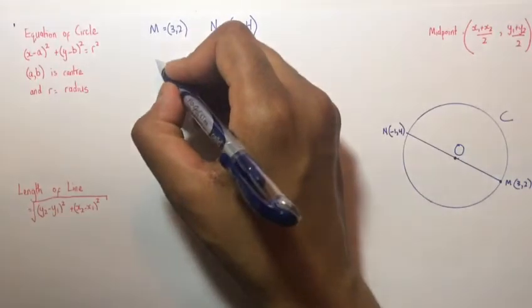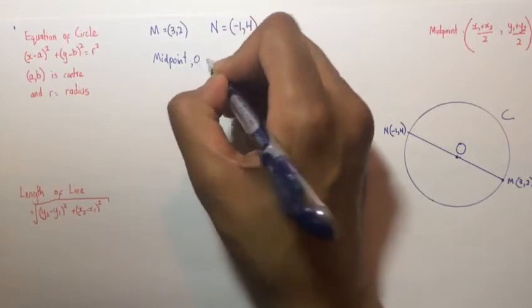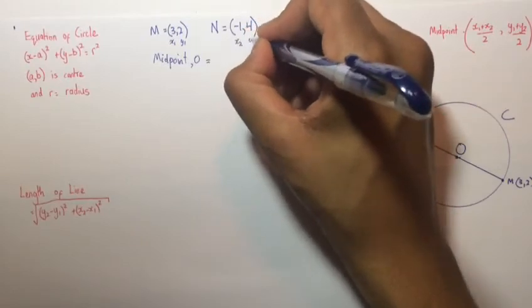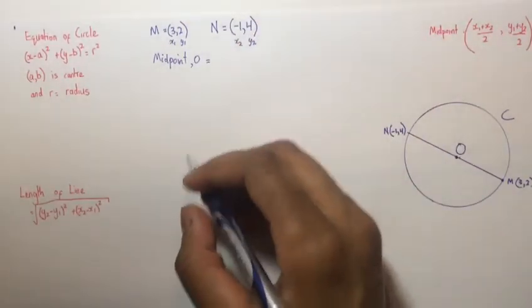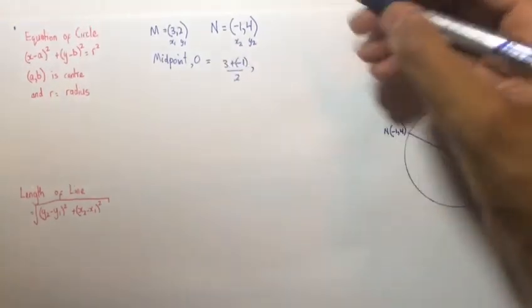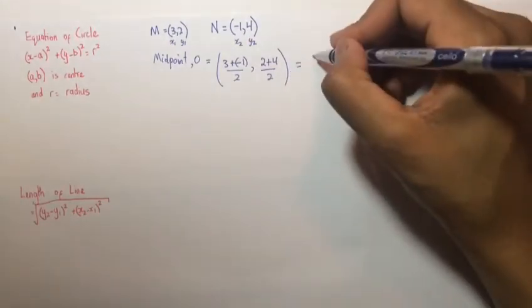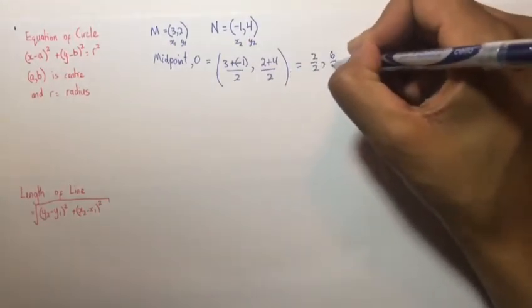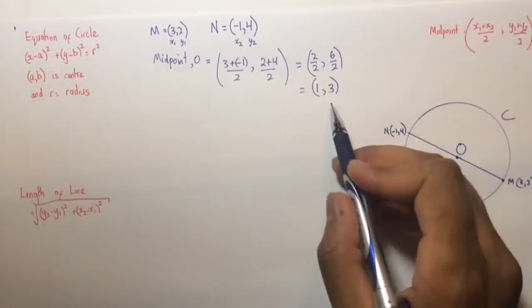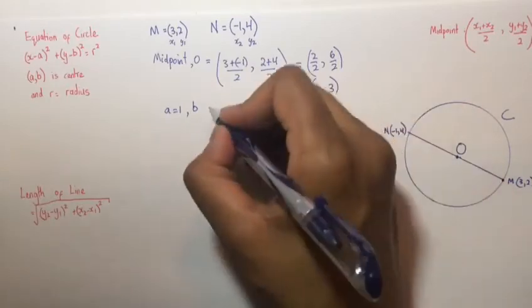So the midpoint O is equal to — labelling M as (x₁, y₁) and N as (x₂, y₂) — we get the midpoint O = (3 + (−1))/2, (2 + 4)/2, which gives us 2/2, 6/2, which is equal to (1, 3). So therefore, a = 1 and b = 3.